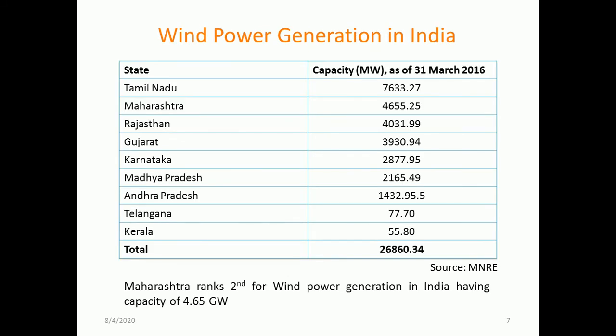Comparing the table for state-wise wind power generation, Tamil Nadu ranks first with almost 7,600 MW of capacity. Maharashtra follows with 4,650 MW, followed by Rajasthan, Gujarat, Karnataka, and Andhra Pradesh. Maharashtra ranks second for wind power generation in India with a capacity of 4.65 GW.